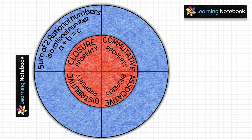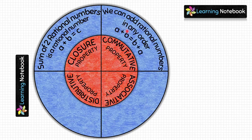Next, commutative property states we can add rational numbers in any order. In general form it is written as a + b = b + a. On the left-hand side we add rational numbers a and b, and on the right-hand side we change their order to b + a, but in both cases their sum remains the same.